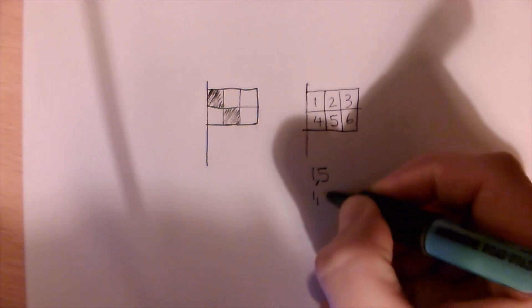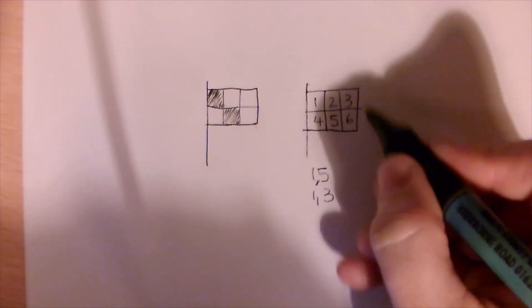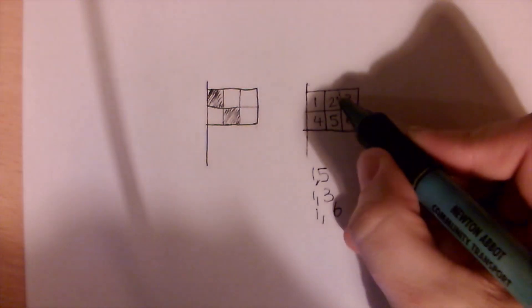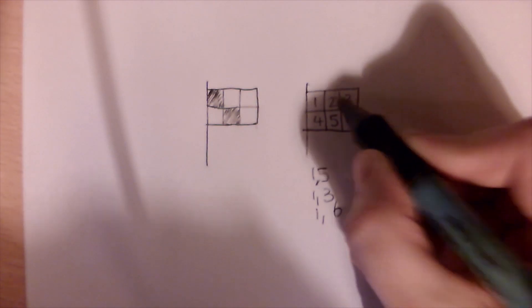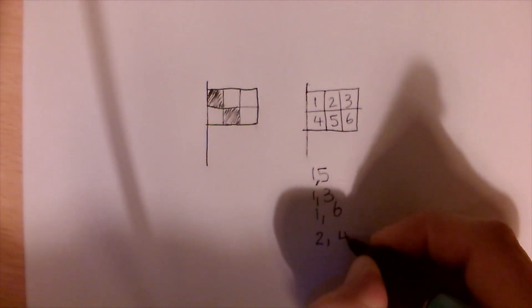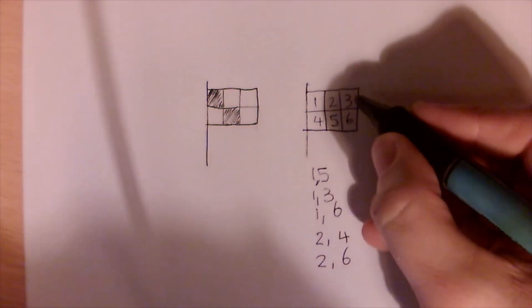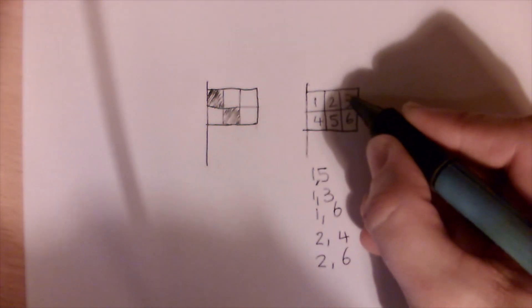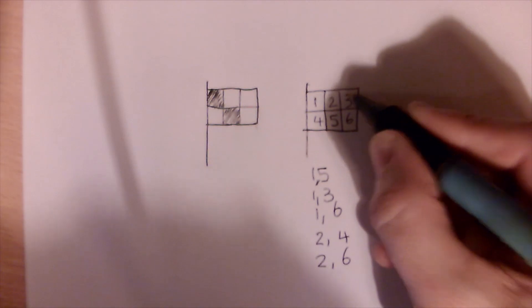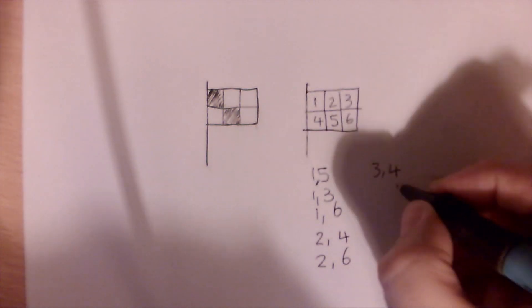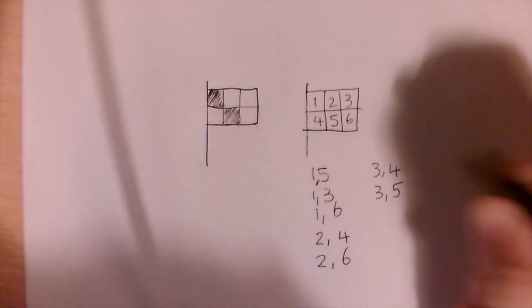So then you can start with two. Which one does two not? Two and four and two and six. It's got to think about three. We've already done three and one, so three and four don't share an edge. Three and five don't share an edge. Think about four.